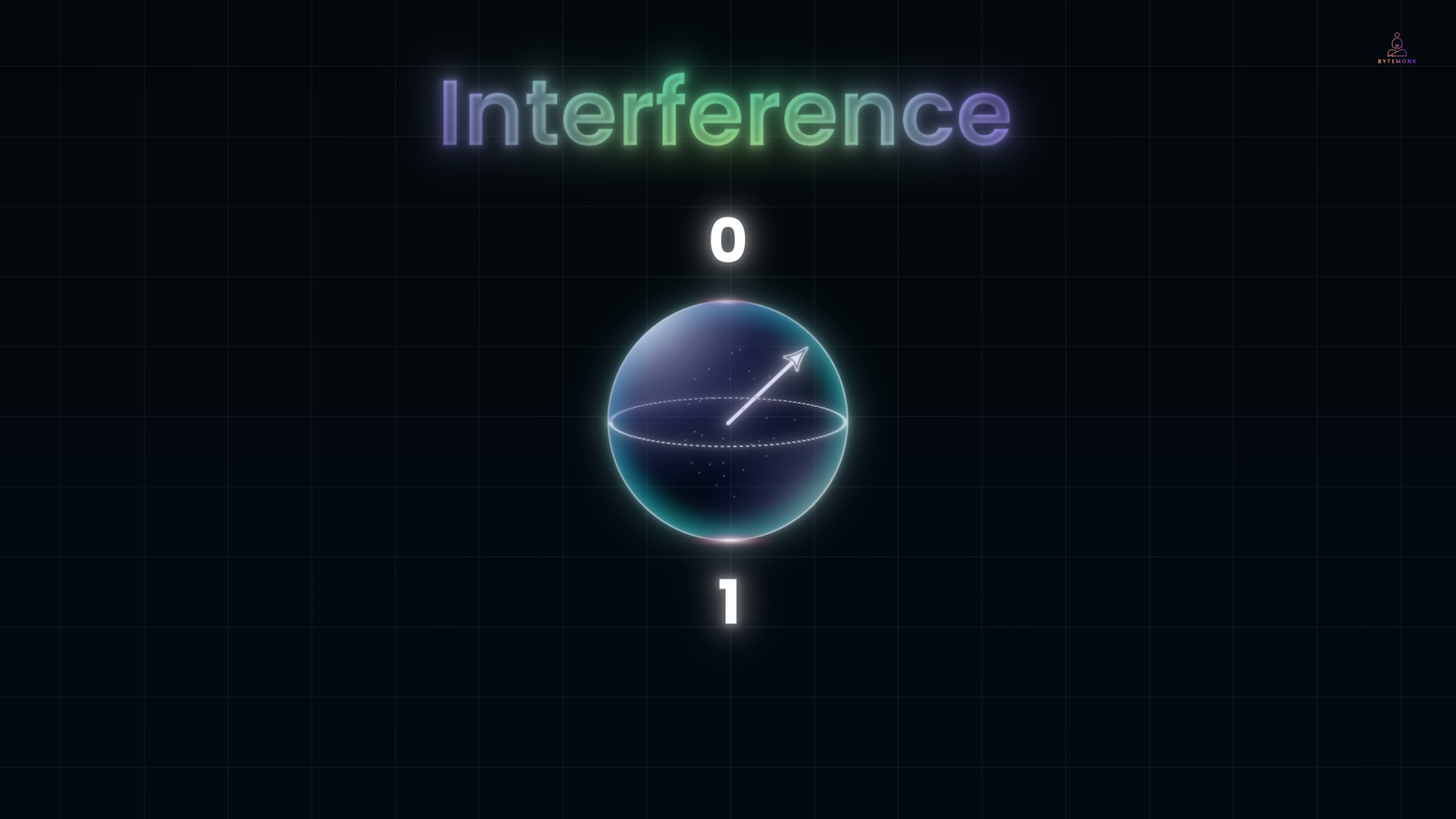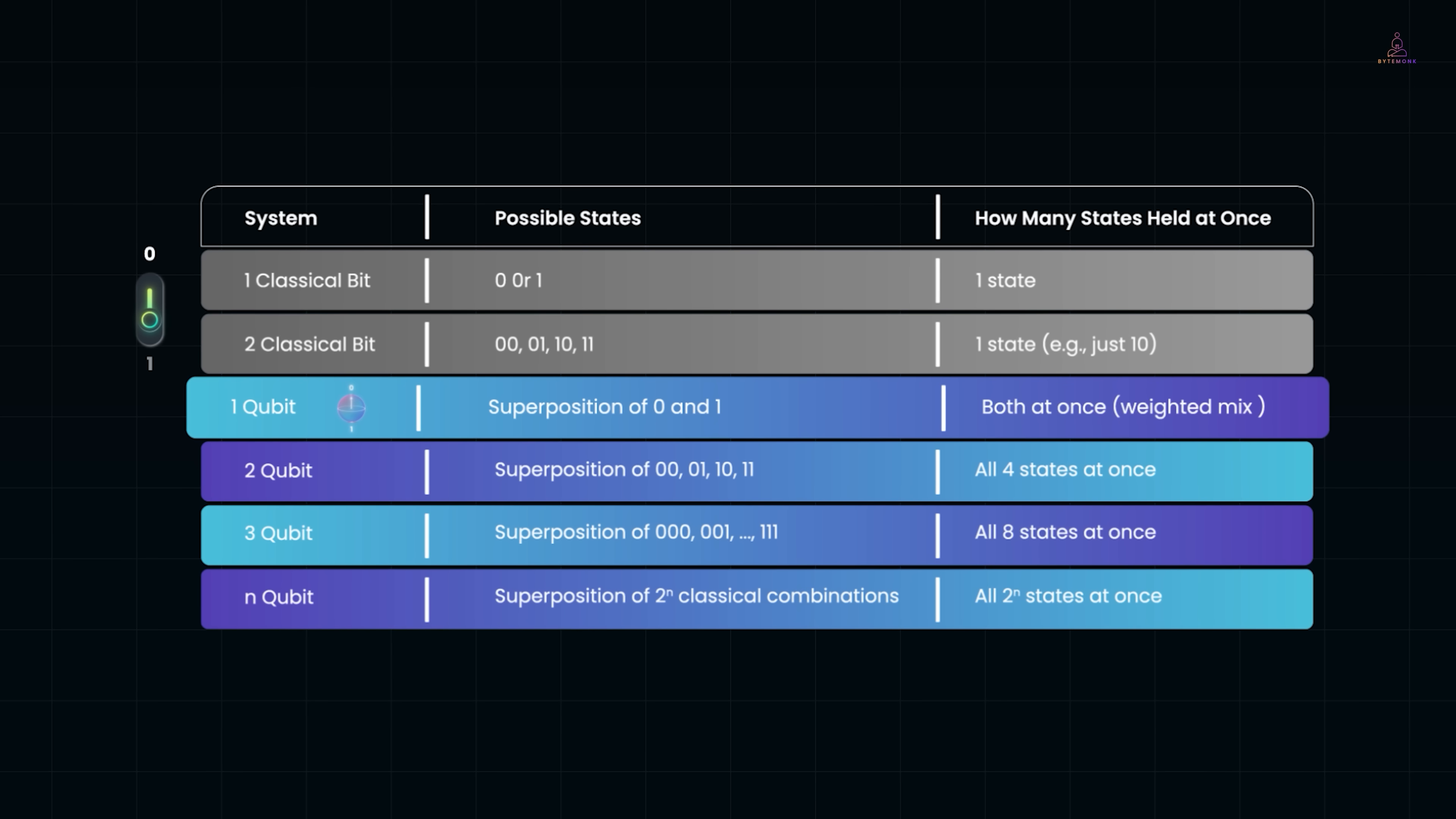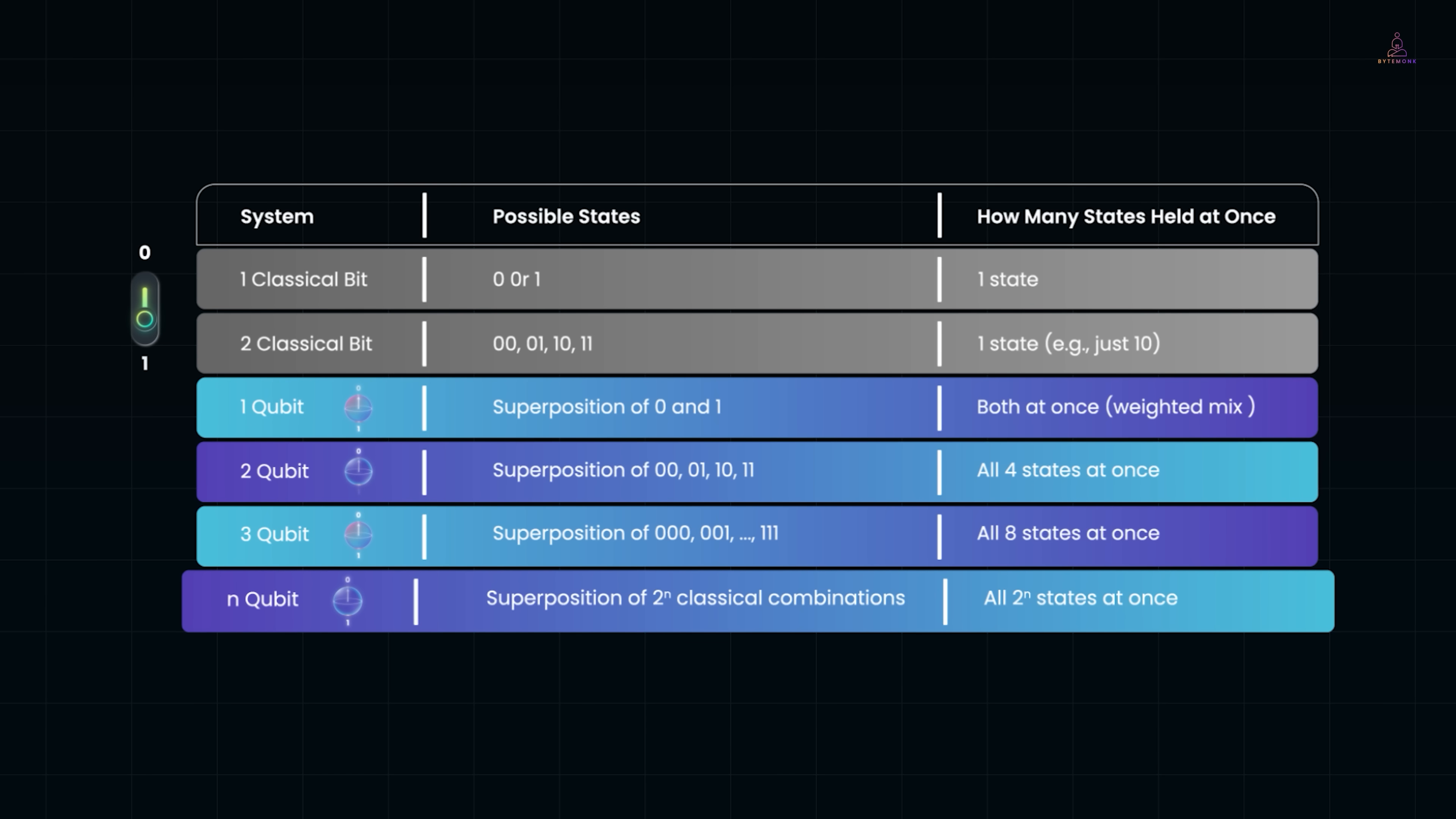Now you might be thinking, so 1 qubit is basically the same as 2 normal bits? Not quite. A single bit can only be 0 or 1. Two bits give you 4 possible combinations, but at any moment they only hold one of those. Now a qubit changes the game. One qubit can sit in a mix of 0 and 1 at the same time. Two qubits can hold all 4 combinations at once. Add a third and you've got 8. And in general, n qubits can represent 2 to the power n possibilities simultaneously. And that's the real difference. Classical bits store one answer, while qubits carry entire libraries of possibilities in superposition.